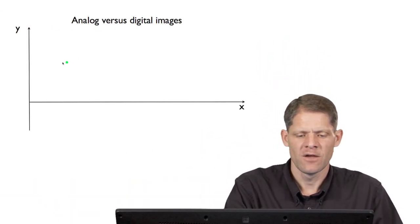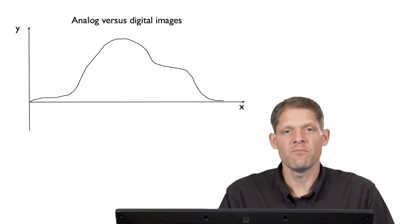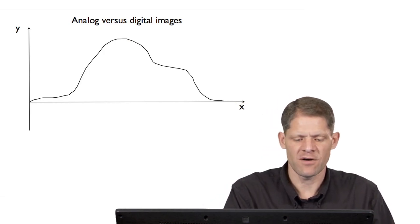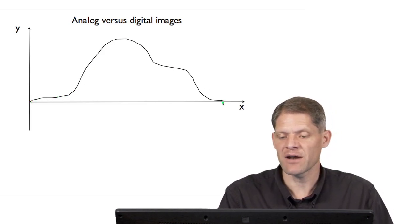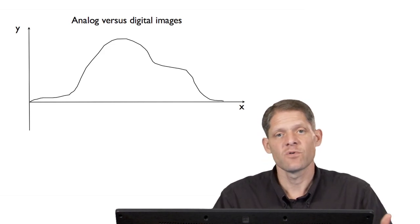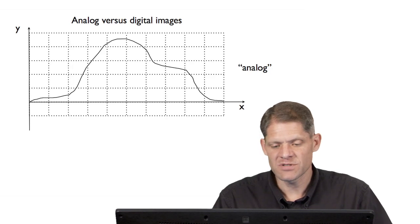So far, we've been considering continuous functions, but in structural biology, we're always going to be working with digitized functions. Just to recall in our minds what we're talking about, we have analog versus digital images. Imagine that we have something as a function of x, and we want to take a picture of an object whose electron density goes from low to high in this kind of a pattern. That's an analog signal. But in fact, we're going to image it on a detector full of pixels, and as a result, we will measure a digital signal.